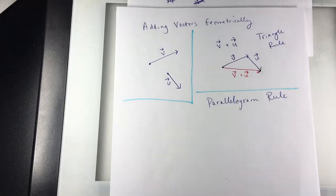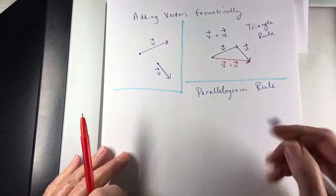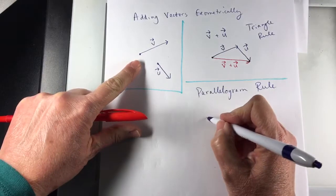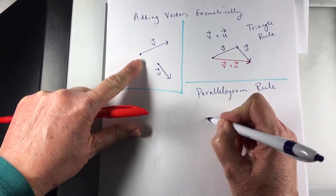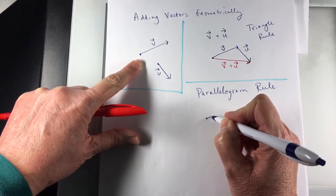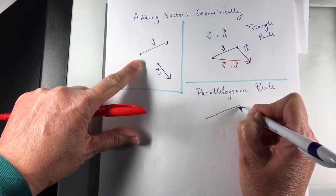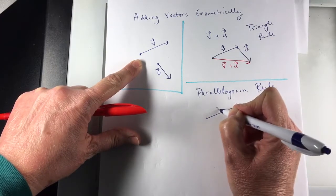So for the parallelogram rule, I'll redraw V. Again, same vector, same length, same direction. There's V.